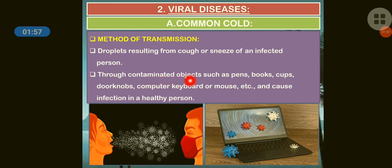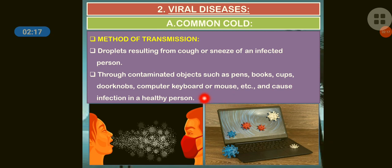Another method of transmission is through contaminated objects such as pens, books, cups, doorknobs, computer keyboards, or mouse, etc. These objects, when contaminated by an infected person, can cause infection in a healthy person who comes in contact with them.